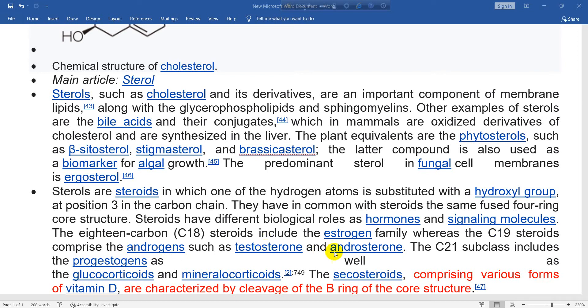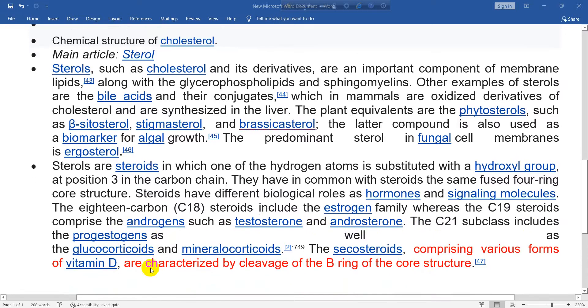The carbon 21 subclass includes the progesterones as well as the glucocorticoids and mineralocorticoids.